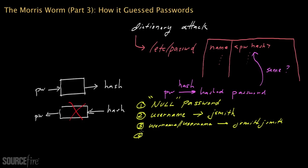The fourth thing that the Morris worm tried is the username in reverse order, in other words, backwards. So for example, if the username were jsmith, then the Morris worm would try htimsj, which is basically jsmith written backwards.